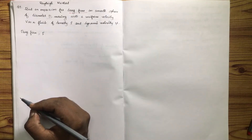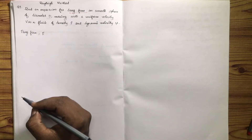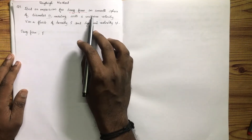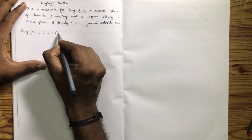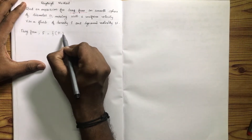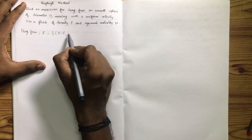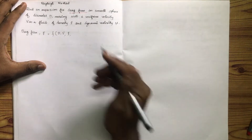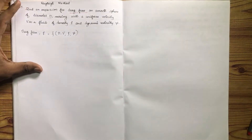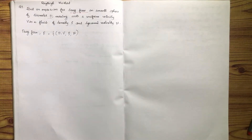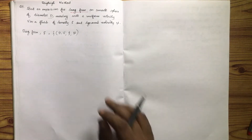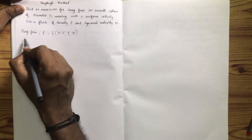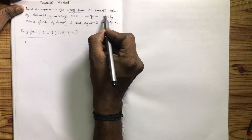The drag force depends upon the diameter D. It is a function of diameter, with the sphere moving with uniform velocity V. V is a function of fluid density rho, and R is a function of dynamic viscosity mu. The expression for drag force depends on these four quantities. There are 4 kinds of quantities: dependent and independent.